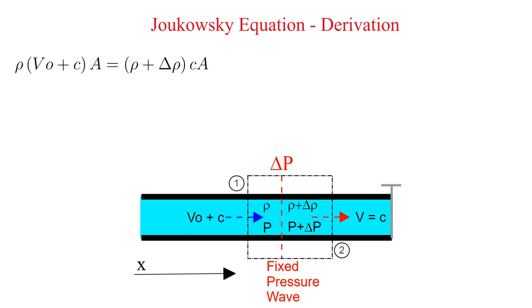The results are provided here. Now let's simplify. We are left with delta rho is equal to rho times V0 divided by the celerity.